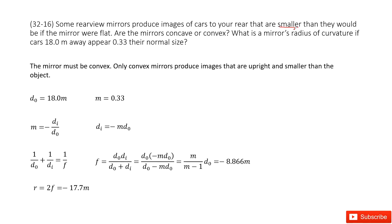That means the magnification is smaller than one. Only convex mirrors produce images that are upright and smaller than the object. So the mirror must be convex. The first part is decided.